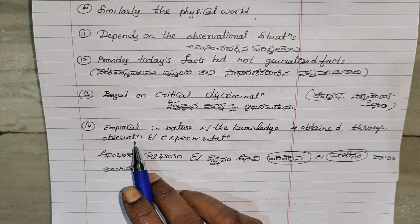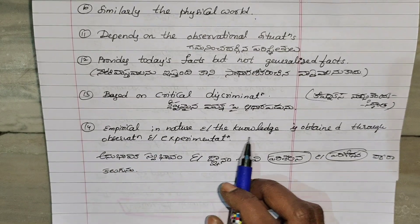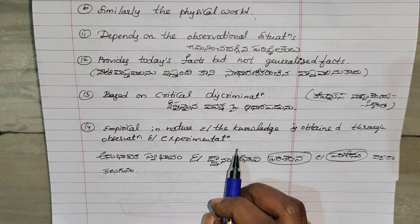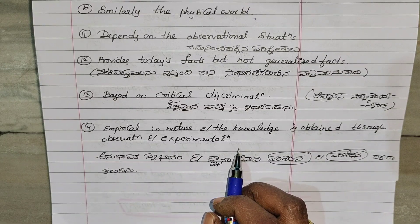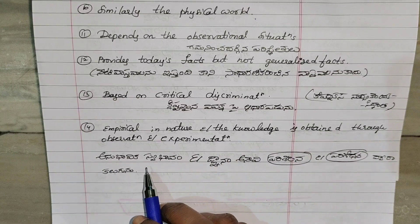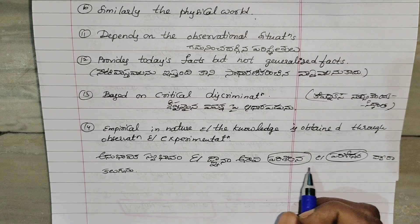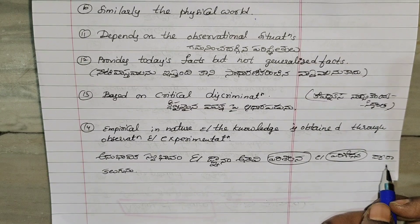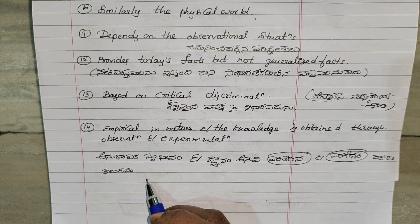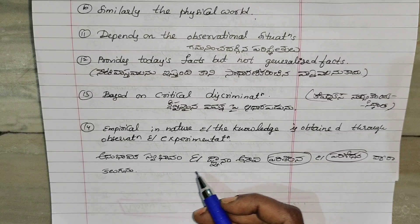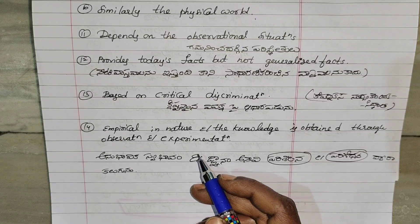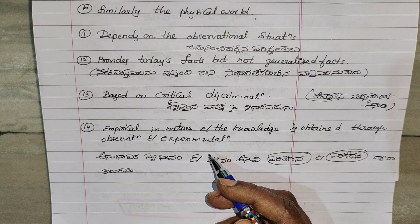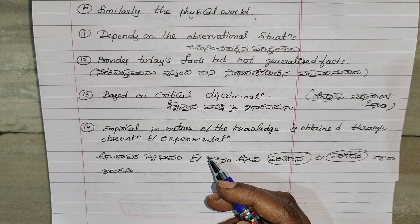Science is empirical in nature and the knowledge is obtained through observation and experimentation. The knowledge is obtained through parishilana and parishodhana. For example, we have experimentation, titration, and product synthesis.